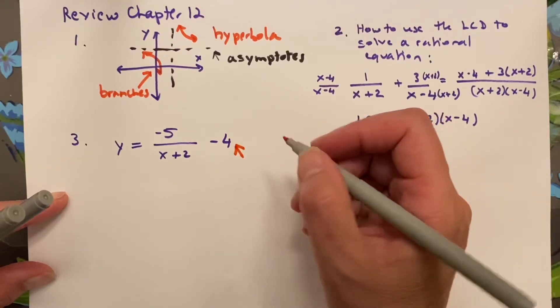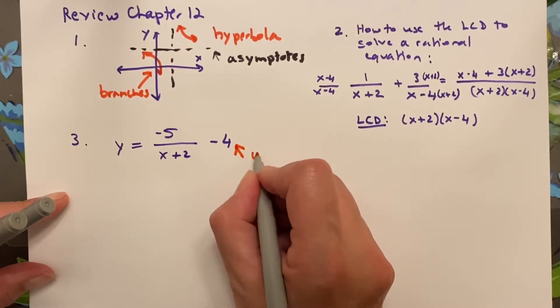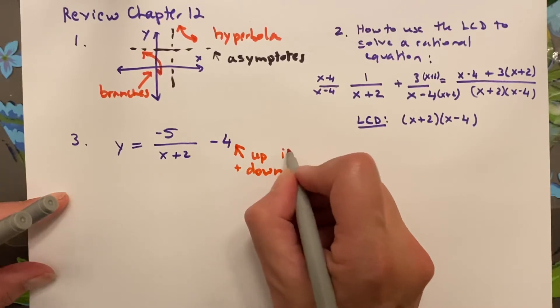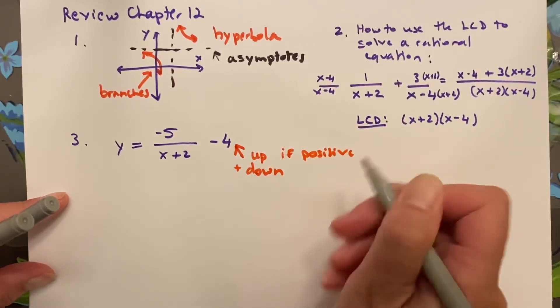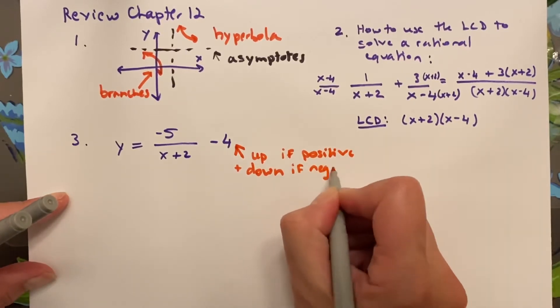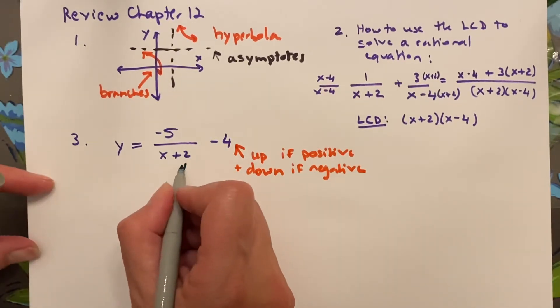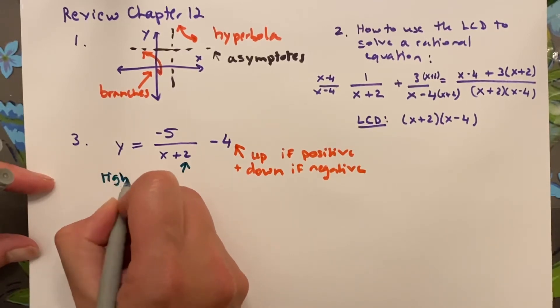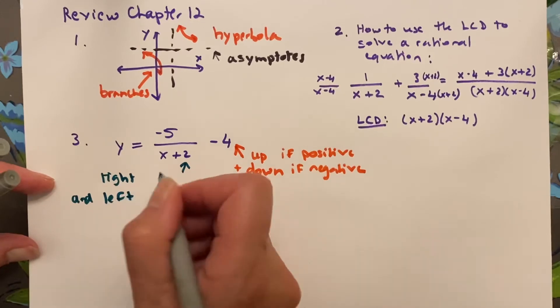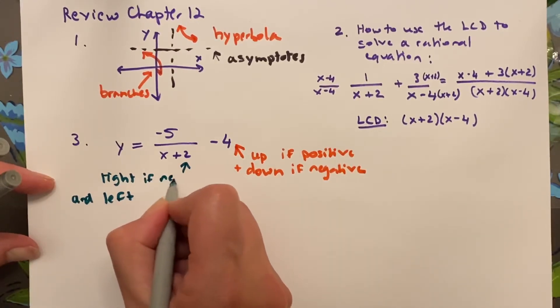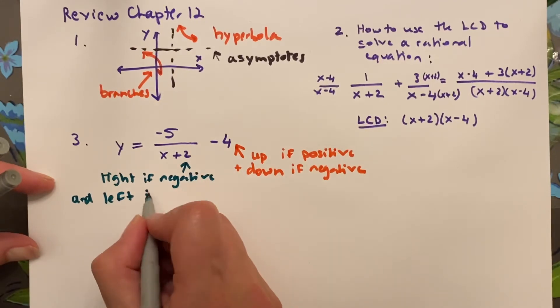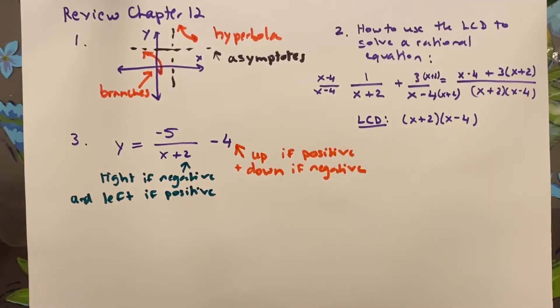This is the value k in the equation, and this makes it go up and down. Up if it's positive, and down if negative. This number makes it go right and left. Right if negative, and left if positive. You have to remember this. Write it down somewhere. I'm going to let you use that on the test, but you have to write that down somewhere.